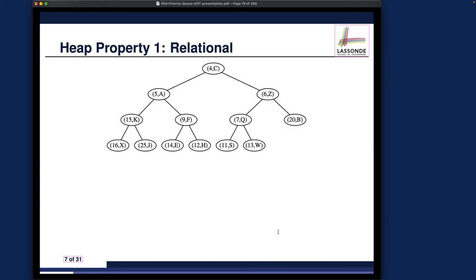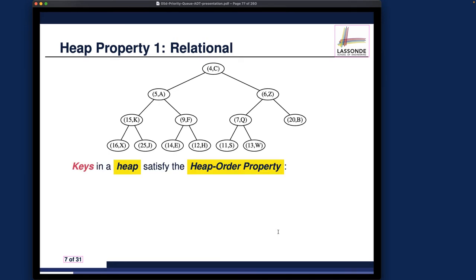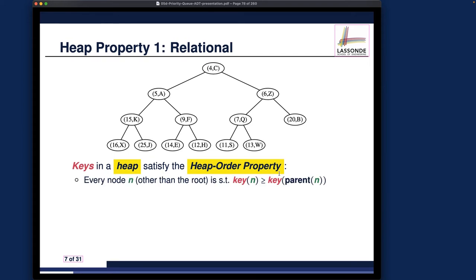Let's start with the relational property. It's also called the heap order property, or HOP. The key values for every entry must satisfy it: every non-root node is such that its key value should be larger than or equal to the key of its parent. That's the simple definition.